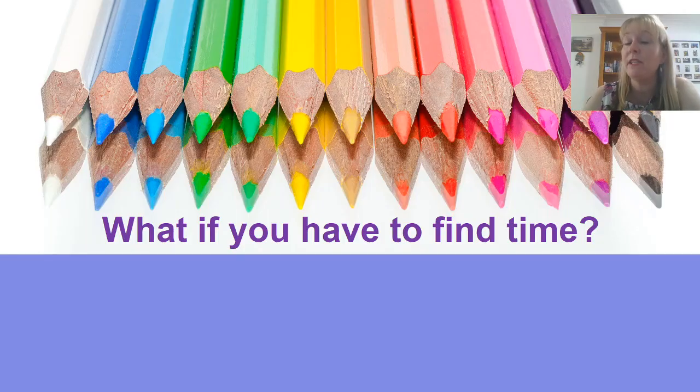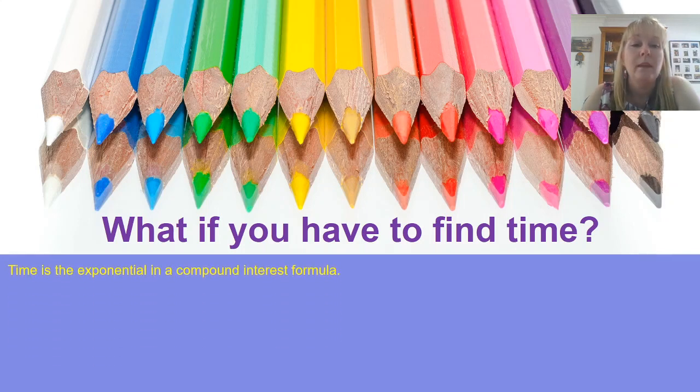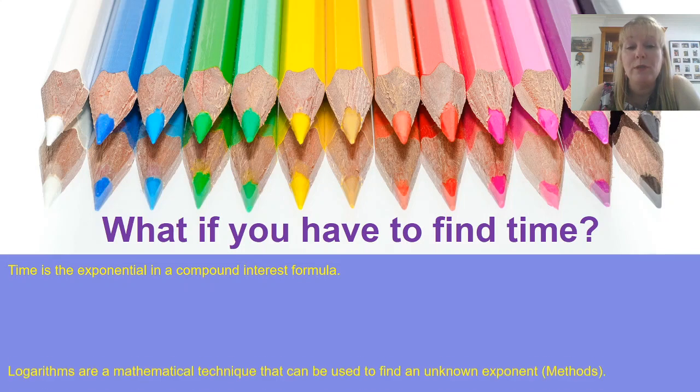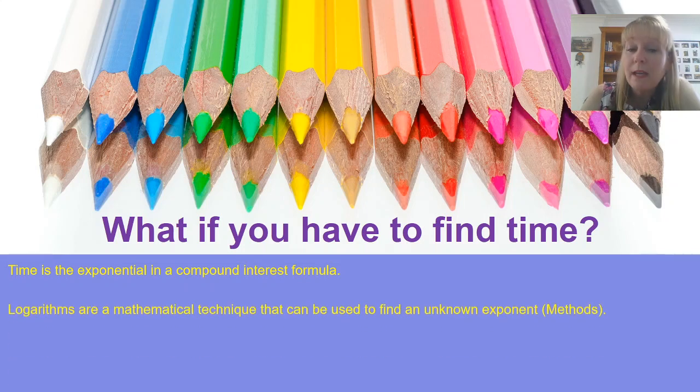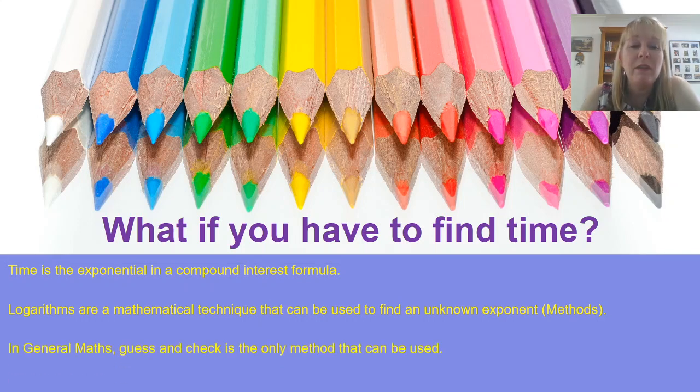Okay, you might be asking what happens if you have to find the variable time? Time is one of our powers. Well, time is the exponential in the compound interest formula. And logarithms are a mathematical technique that we could use to find an unknown exponent. But we only do this in math methods and prep math methods. So if you're doing general, then the only method you can really use is guess and check. Now what I would suggest for doing this is you evaluate as much as you can down to the part where you have to find the power. And then you're simply going to put some suggestions on your paper for your teacher and try and narrow it down as close as you can to a value for time.